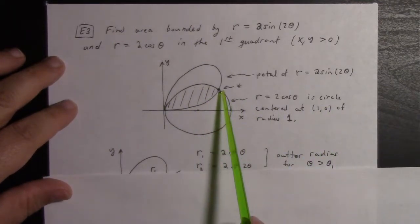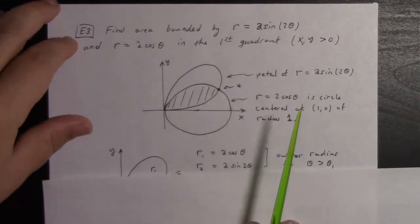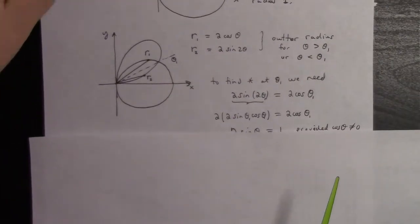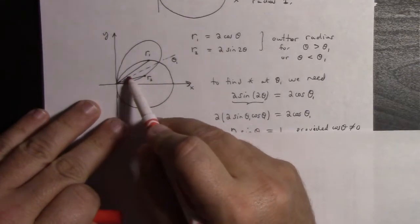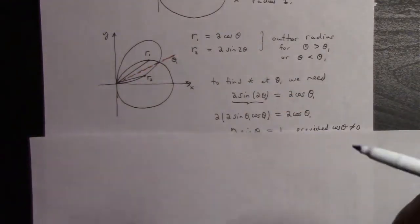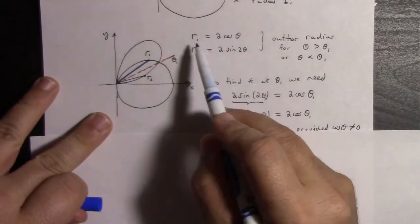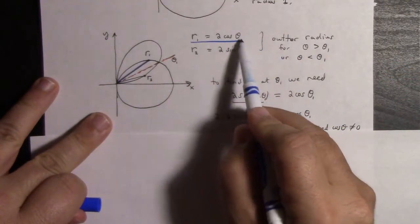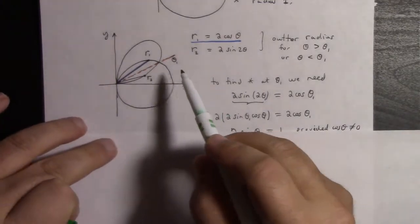The thing is we need to figure out the intersection point. If you look at that, you can see there's really two stories going on—above and below the dotted line. It's a different story above and below. Above the dotted line, we have inner radius 0 and outer radius r₁ = 2cos(θ), because the circle is providing the edge of the region.